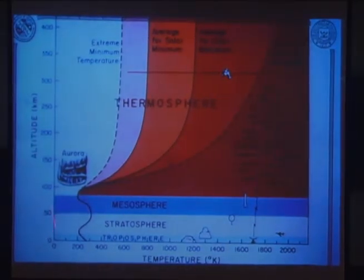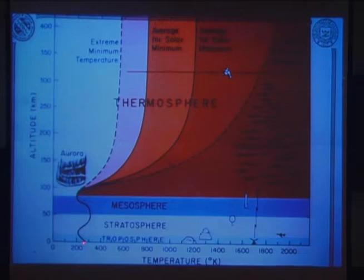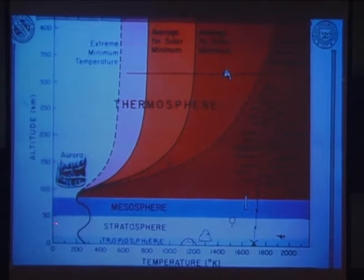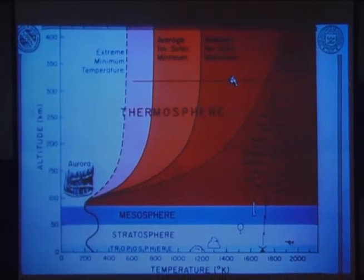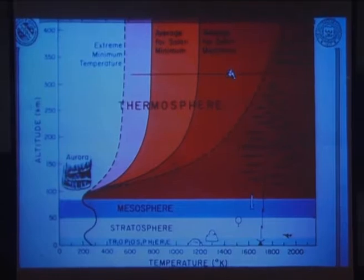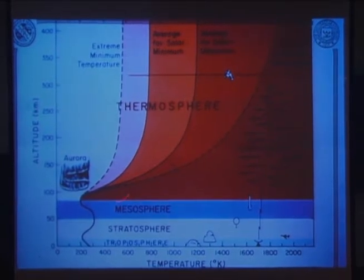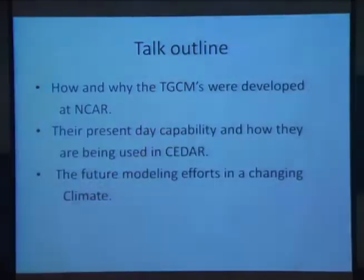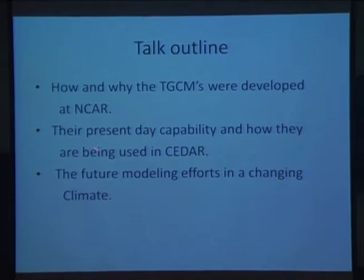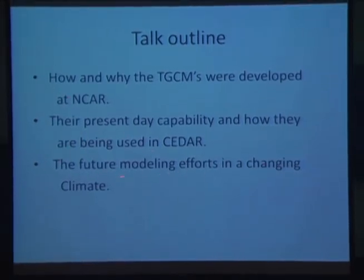For the past 35 years, I've normally started with this particular slide to show just where in the atmosphere the modeling has gone and where it is directing. What I show here is altitude versus temperature: the troposphere, stratosphere, and the mesosphere. With the TIME-GCM, I'll be talking about the atmosphere from about 30 to 500 kilometers, which encompasses only about a percent of the entire atmosphere. I normally plot it this way because in pressure coordinates the thermosphere would look much smaller. The talk outline covers how and why the TGCMs were developed at NCAR, their present-day capability, how they're being used in CEDAR, and future modeling efforts in a changing climate.